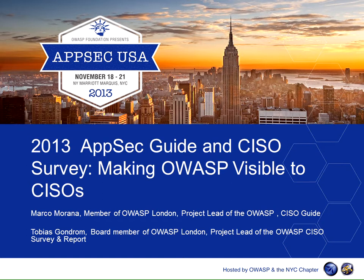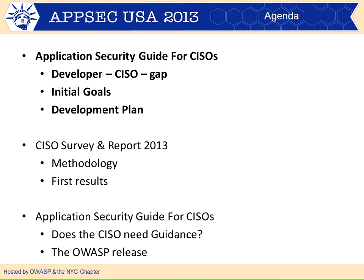This talk is divided into three parts. In the first part I'll introduce the CISO guide, the goals of the guide, why we developed it, and the plan we followed for the project's development. Then Tobias will introduce himself and the CISO survey, which is a parallel project done almost in sync. At the end I'll wrap up with situational awareness about being a CISO. How many of you are a security manager in this room? So it's a fair amount — this is directed towards your role and responsibility.